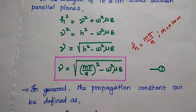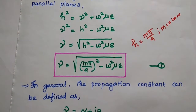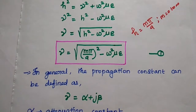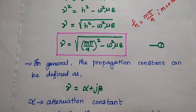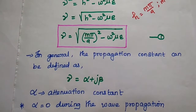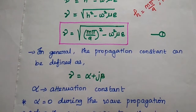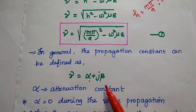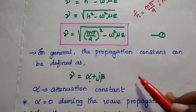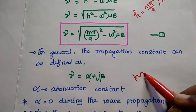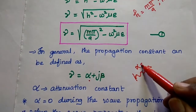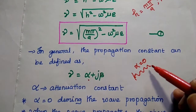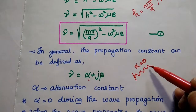In general, the propagation constant can also be defined as α + jβ, where α is the attenuation constant and β is the phase shift constant. When the wave is propagating, we can assume the attenuation constant value is 0, meaning there is no loss. Attenuation represents loss.